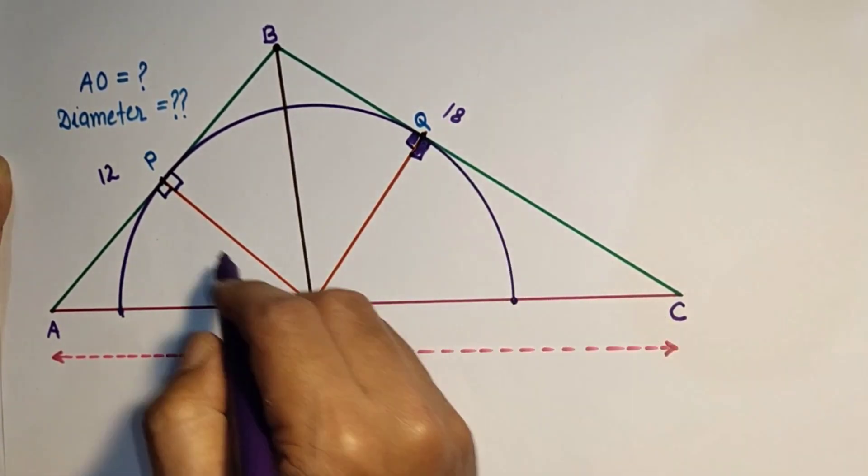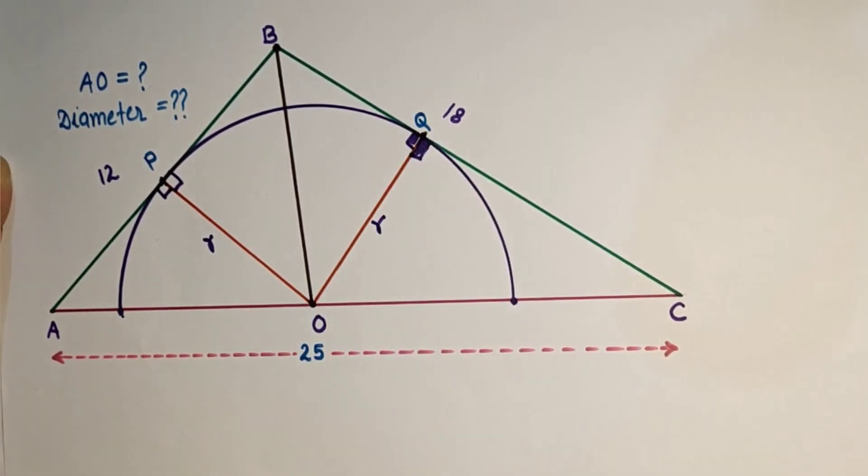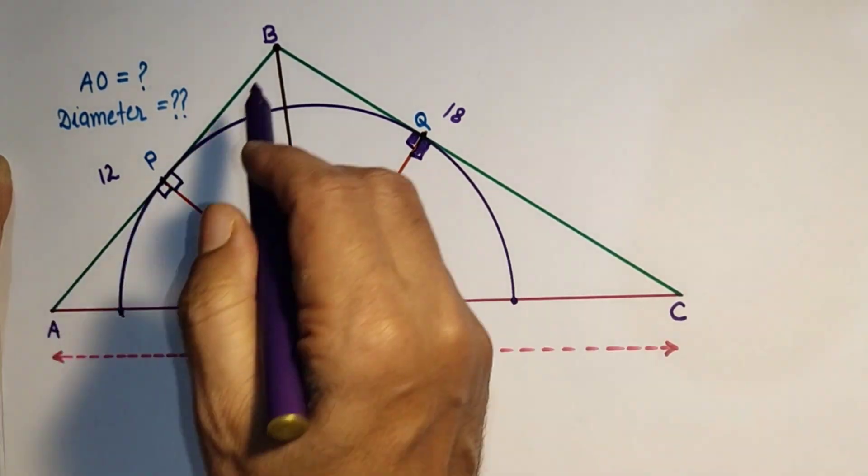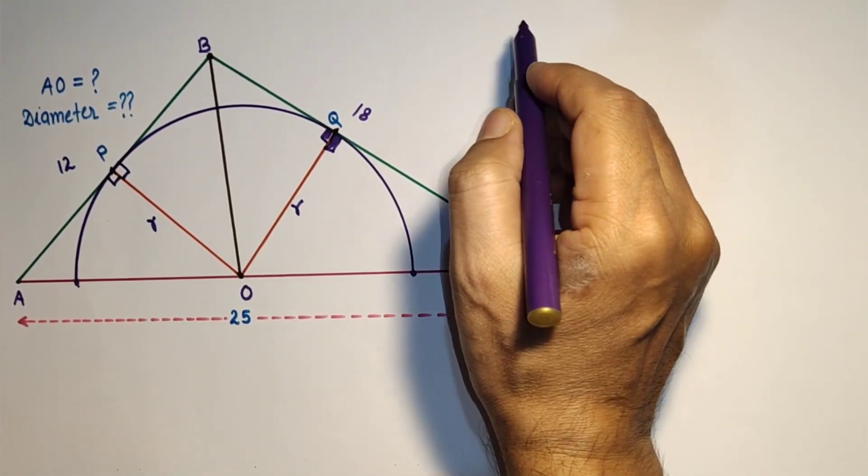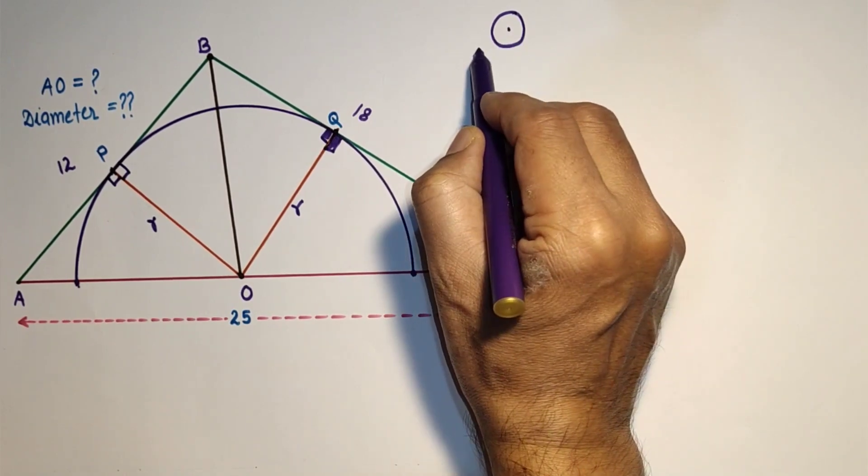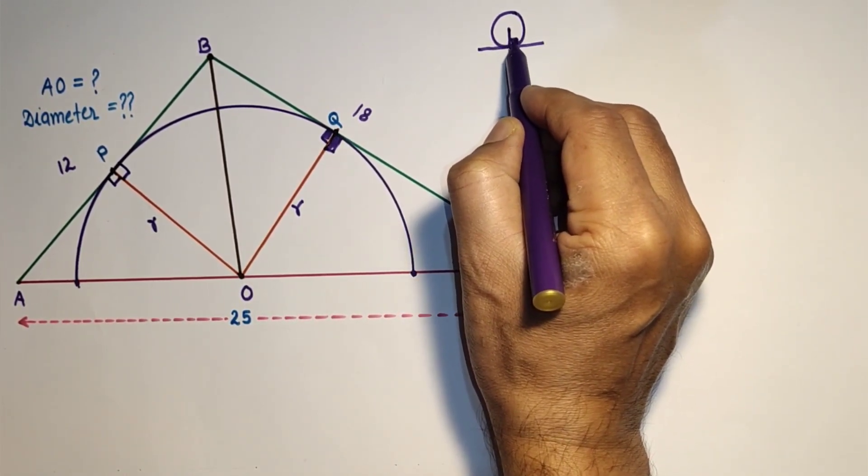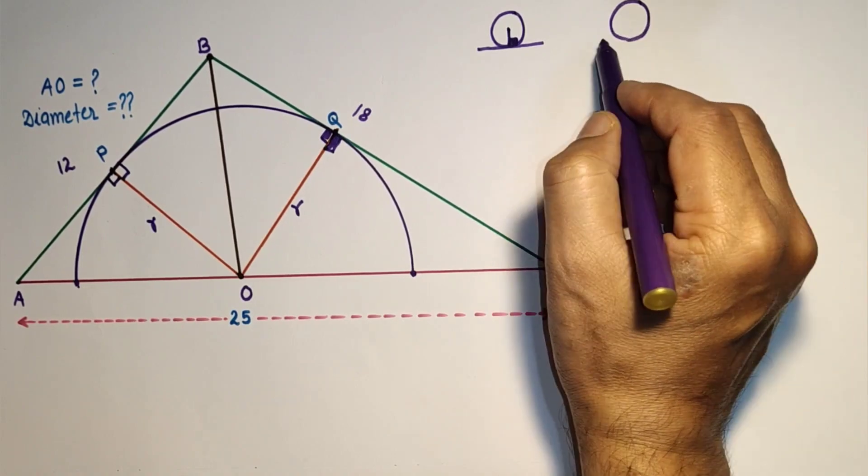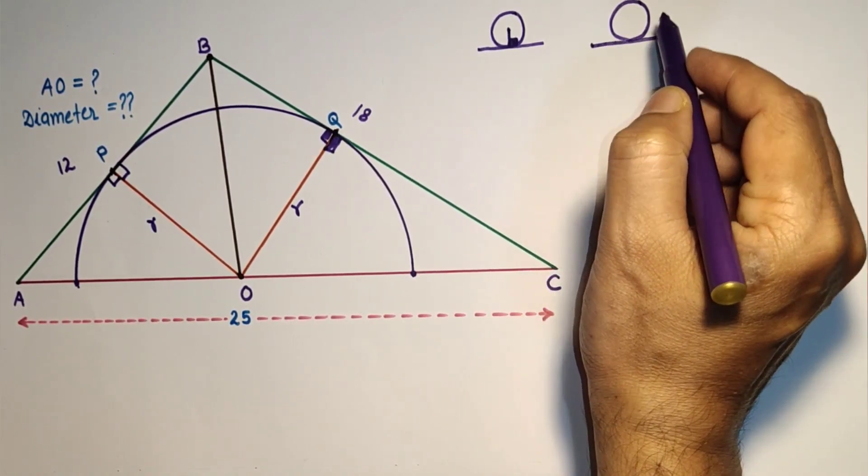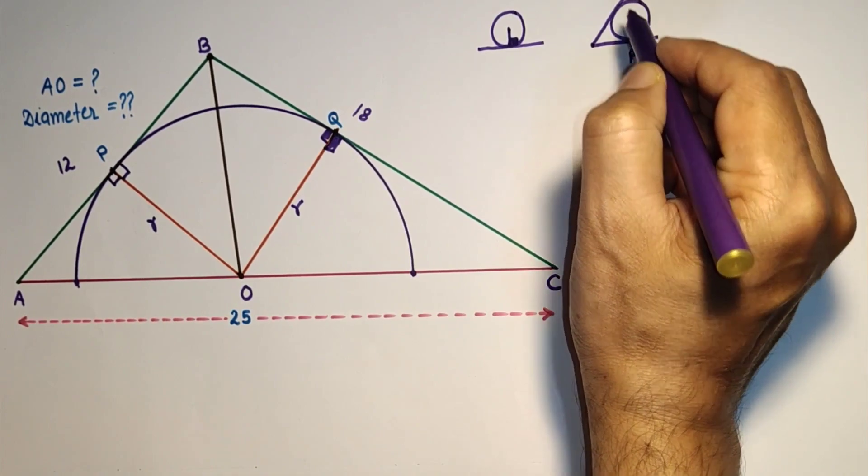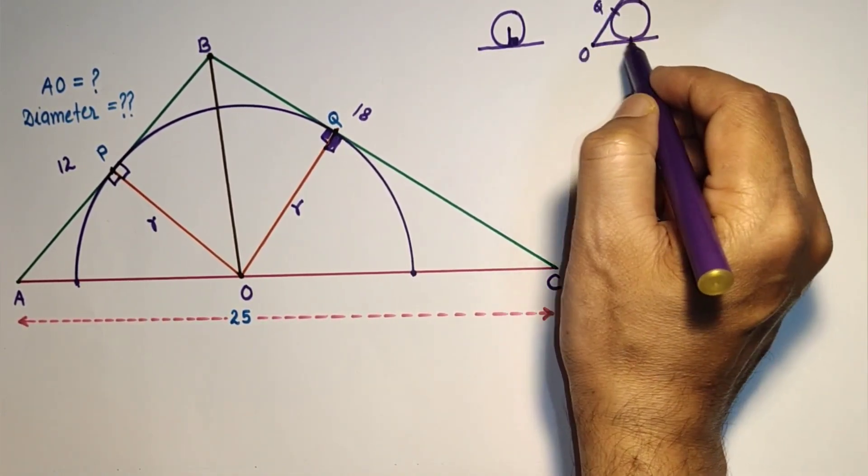This OQ and OP are radii from the center to the circumference. And we know that from an exterior point, tangents drawn to a circle or semicircle in this case will be equal. It means BP is equal to BQ. Basically we are going to use two or three concepts: radius and tangent at the point of contact will be perpendicular, and from outside point two tangents drawn to a circle will be equal. If this is P and this is Q then OP is equal to OQ.